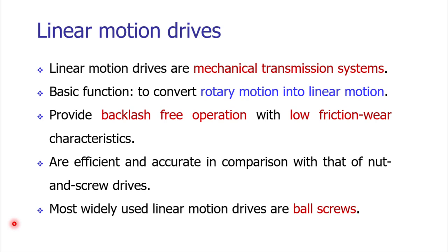In the context of automation in manufacturing, we focus on precision linear motion drives that have very low backlash, low friction, and low wear characteristics. Among many linear drives, the most prominent is the ball screw based linear drive. It is widely used, so let us study the various aspects of the ball screw linear drive.